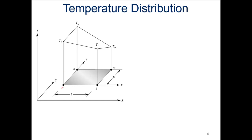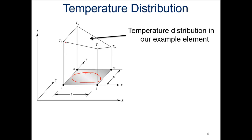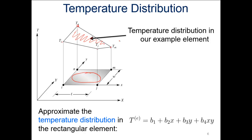For the temperature distribution, here are nodes i, j, m, and n making up the plane. If we plotted the temperature distribution, we might have a higher temperature at node n, a low temperature at m, and intermediate temperatures at i and j — creating a plane of temperature that changes across the space. The approximate temperature distribution in a rectangular element is T equals b1 plus b2·x plus b3·y plus b4·x·y, where b1 through b4 are unknown coefficients we need to determine.